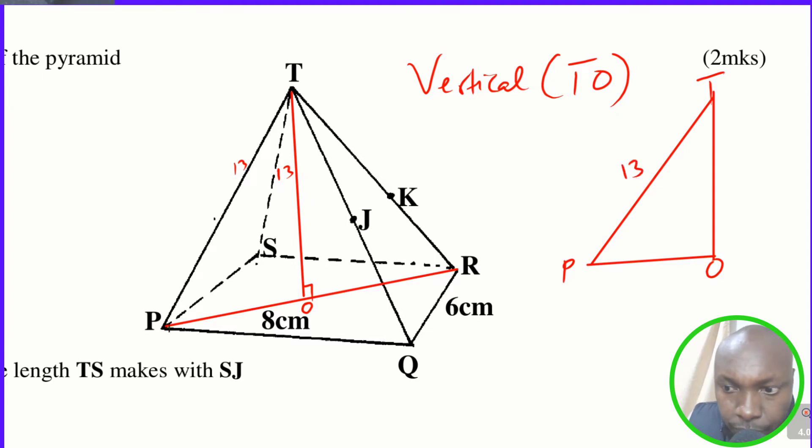And PO, look at PO. PO lies on that diagonal. So we know very well that the base is rectangular in shape. So all these angles are 90 degrees. So if we use this triangle that is here, this triangle that is PQR, look at triangle PQR, the one that I've shaded. That one is a right angle triangle.